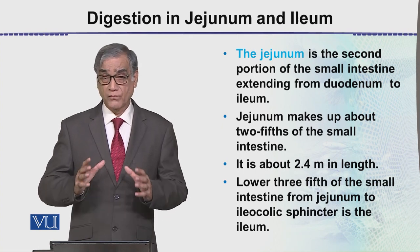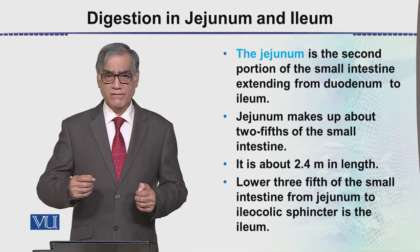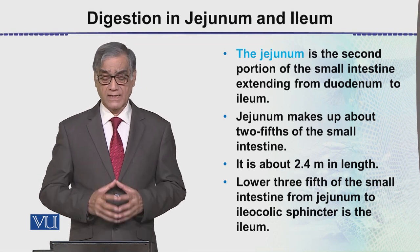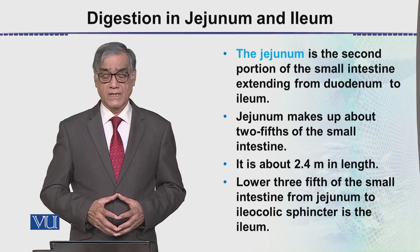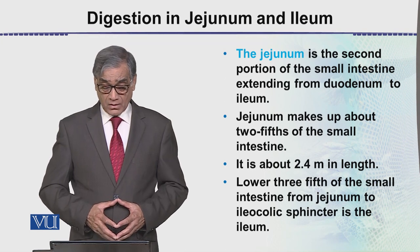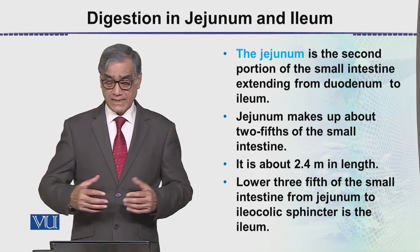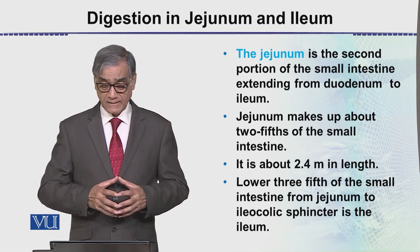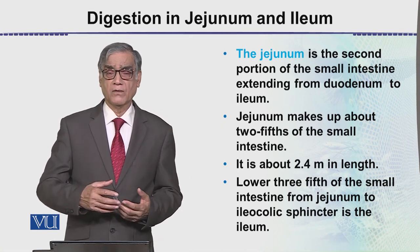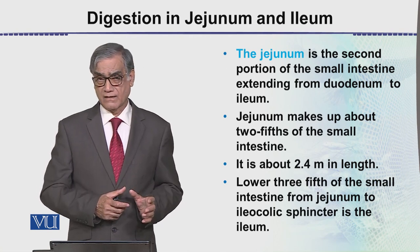If the small intestine is seven meters, then two-fifths of that constitutes the jejunum, and the lower three-fifths makes the ileum. The ileum then opens into the large intestine.